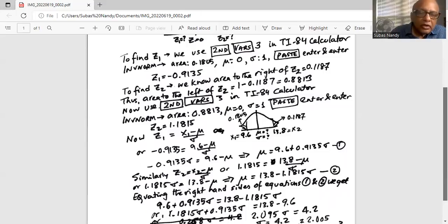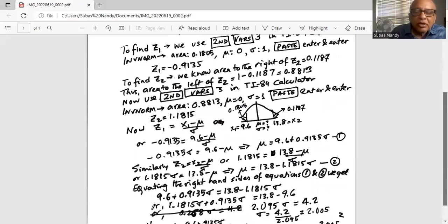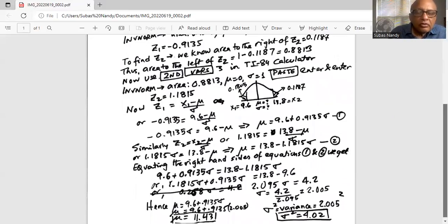Now if you look at equations 1 and 2, on the left hand side of the equal sign we have mu. Since the left hand sides are equal we can equate the right hand sides and we will get 9.6 plus 0.9135 sigma is equal to 13.8 minus 1.1815 sigma. Now we move all the sigmas to the left hand side and we get 1.1815 times sigma plus 0.9135 sigma is equal to 13.8 minus 9.6, or 2.095 times sigma is equal to 4.2.